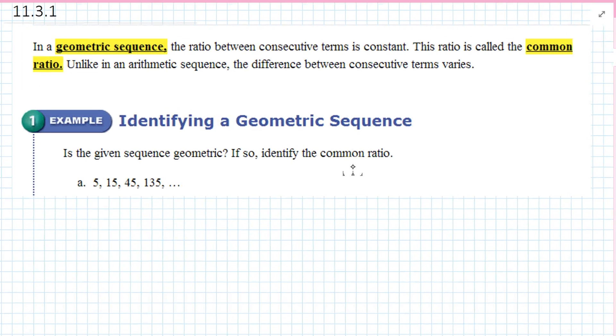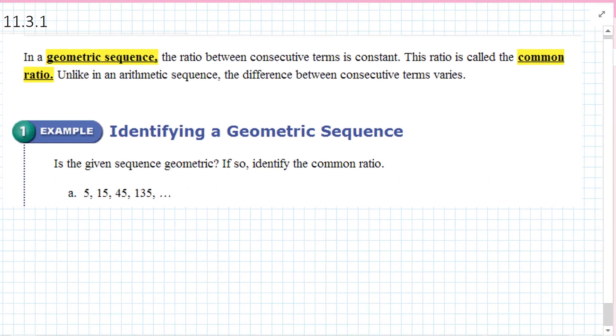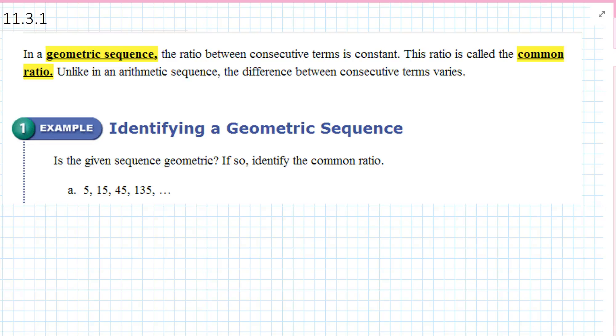A geometric sequence is nothing more than a ratio between consecutive terms as constant. This ratio is called the common ratio, and unlike arithmetic sequence, the difference between consecutive terms varies.